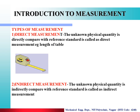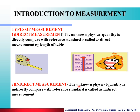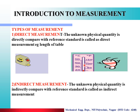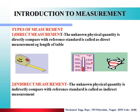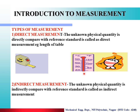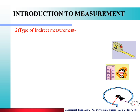The second type is indirect measurement — the unknown physical quantity is indirectly compared with the reference standard. Example: thermometer. When you insert the thermometer into water to check temperature, the mercury rises in the capillary. The water temperature is converted into the length of mercury in the capillary. That is called indirect measurement.